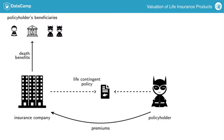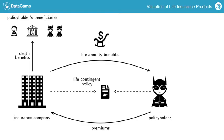In addition to the risk of dying early, our hero also needs products that offer protection against the financial risk of a long life. Indeed, living long requires more money to pay for the cost of living, especially at older ages. You will study life annuities that pay an income while the annuitant is alive, like a pension does.